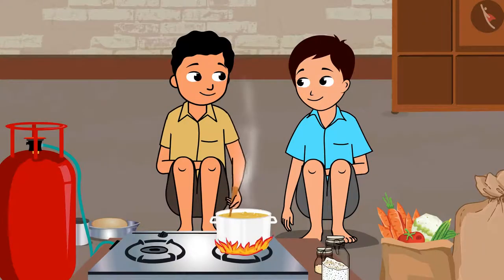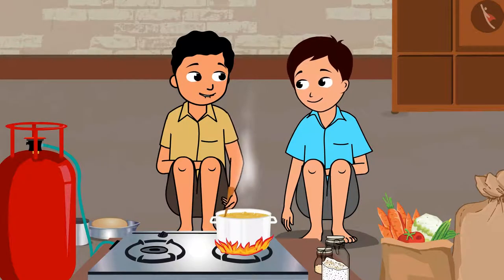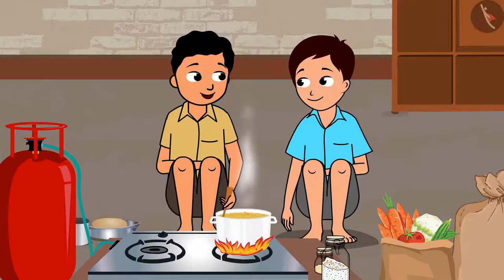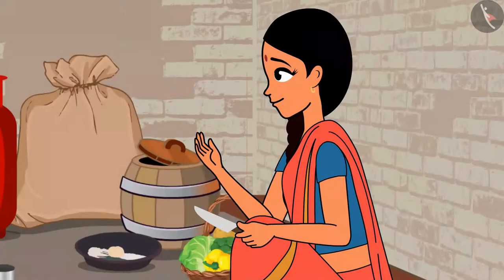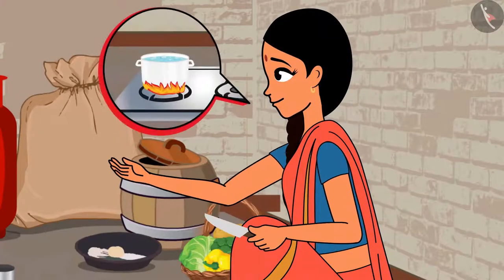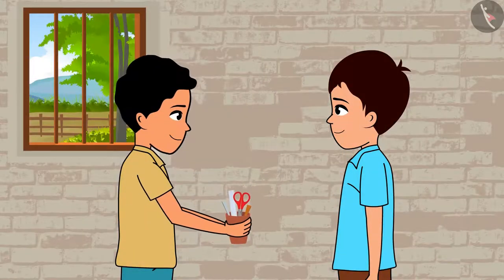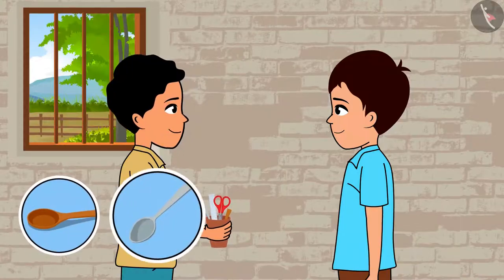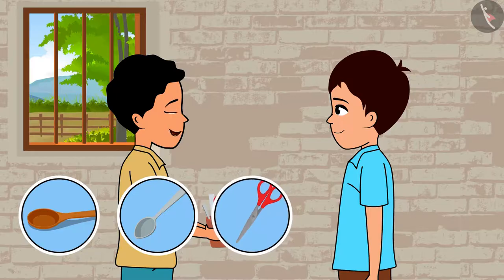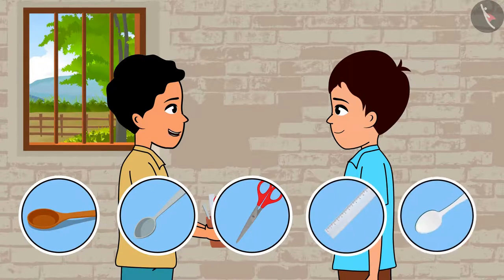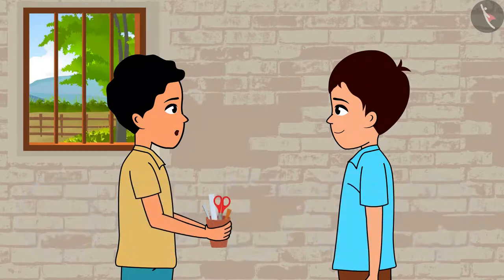Ramesh, let us do an experiment. Let us take different objects made up of different materials, then dip them in hot water one by one, and observe what happens to each object. Children, I shall warm the water and give it to you. Look Ramesh, I have a wooden spoon, a steel spoon, a pair of scissors, a plastic scale, and a ceramic spoon. Come, let us dip all of them in this hot water.